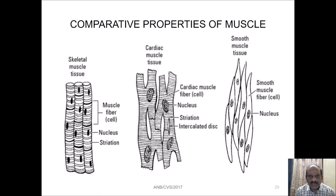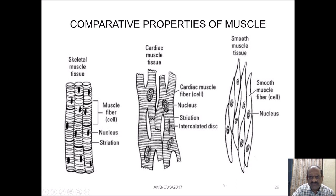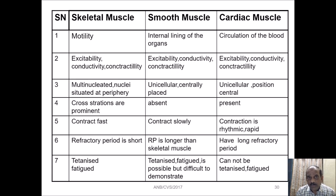In our last introductory lecture, I gave you a brief idea about the cardiovascular system and the importance of cardiac muscle — they are very unique in nature. You can see from the figure how they are arranged. As I repeat, it is a diffuse structure as compared to skeletal muscle tissue and smooth muscle tissue. Today we are going to discuss the comparative properties of these three muscles: skeletal muscle, smooth muscle, and cardiac muscle.